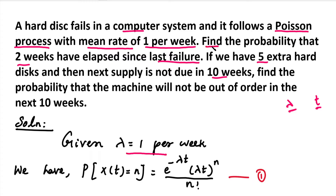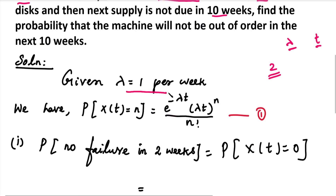For the first part, find the probability that 2 weeks have elapsed since the last failure. That means no hard disk failure occurred in the last 2 weeks. We use the formula P(X(t) = n), where n is the number of hard disk failures and t is the time period.